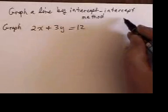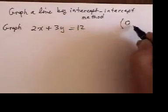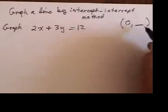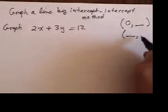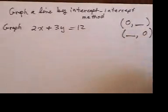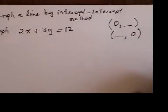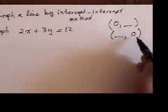The key to it is that whenever I see an intercept, I have a zero here and some number there, or some number here and a zero there. So that's the key to it. Either X is zero or the Y number is zero.